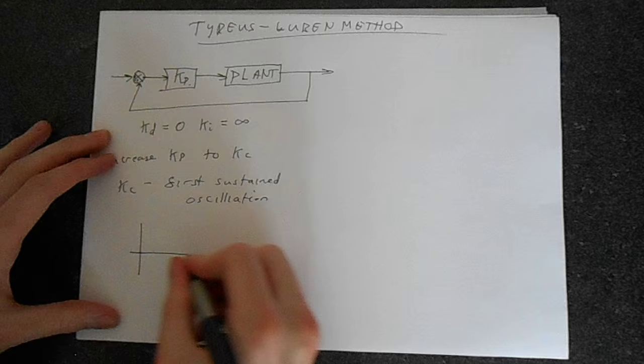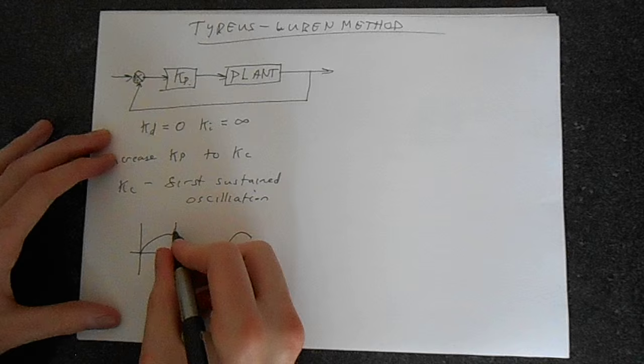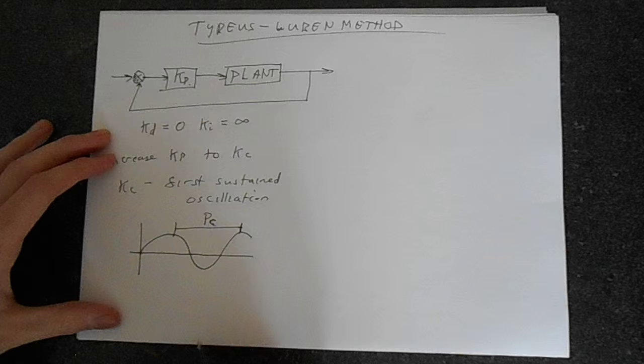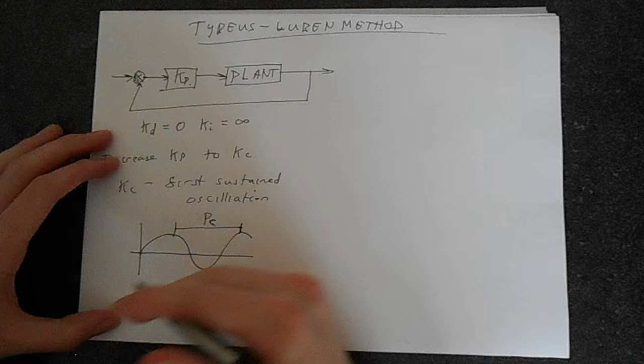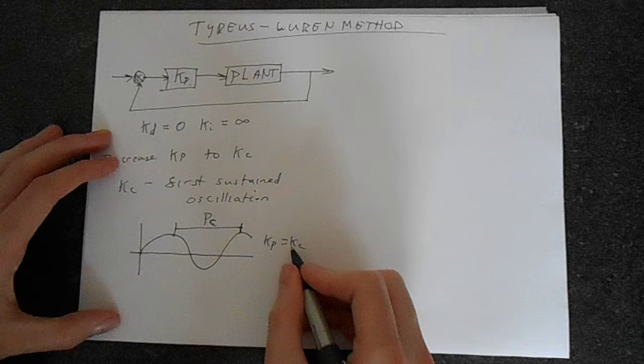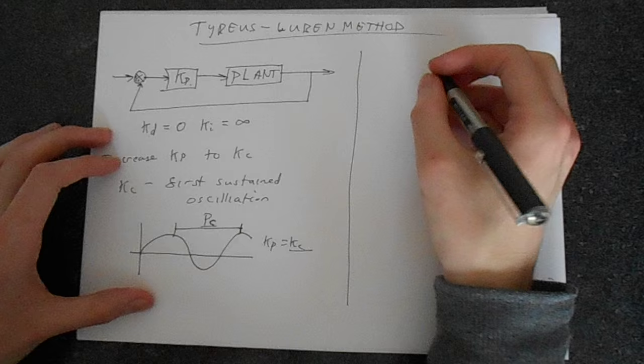You get some response something like this. Not a very good diagram, but basically you look at the period of this response. This is the first sustained oscillation that you get as you slowly increase KP. This is KP equals KC, so you record KC and you record the period, and then you can work out how to create your controller.